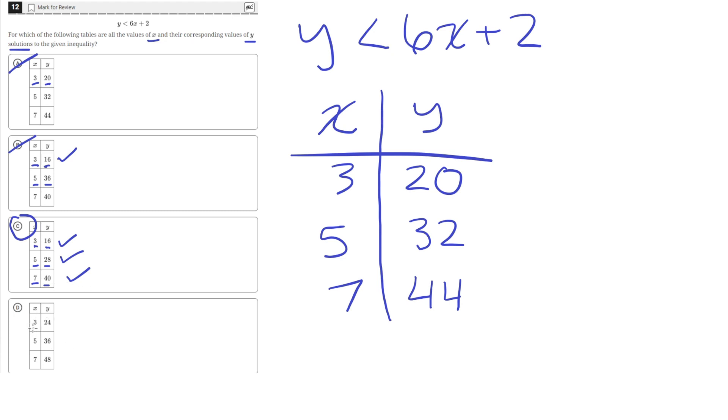And then answer choice D, we can instantly see that it's wrong, because it's saying that an x value of 3, y is 24. But 24 is greater than 20, so answer choice D is incorrect. So C is the correct answer.